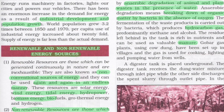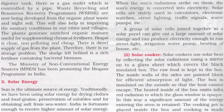Gobar gas plants, produced using cow dung, have been set up in villages. The gas is used for cooking, lighting, and pumping water from wells. A digester tank is placed underground and receives the dung-water mixture through an inlet pipe, while the other side discharges the spent slurry through an outlet pipe. On top of the digester tank there is an outlet controlled by a pipe, from which the useful gas is passed through pipes and used in home kitchens, for lighting, and other purposes.